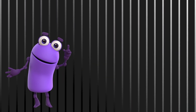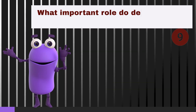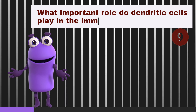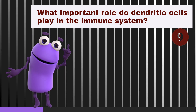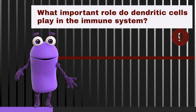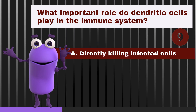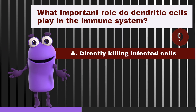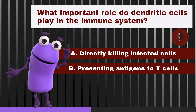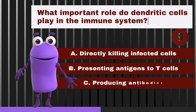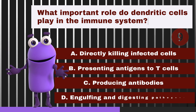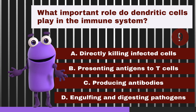What important role do dendritic cells play in the immune system? A. Directly killing infected cells. B. Presenting antigens to T cells. C. Producing antibodies. D. Engulfing and digesting pathogens.